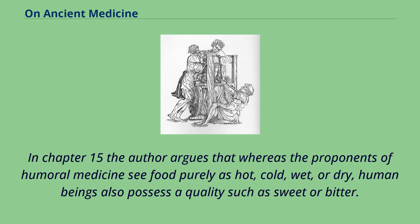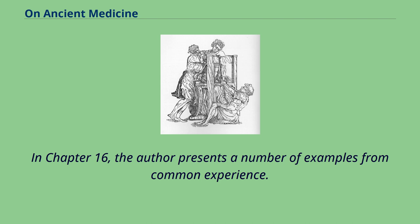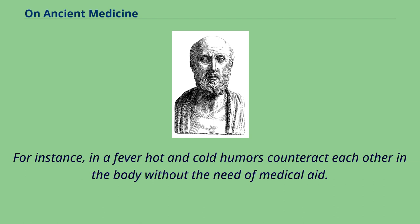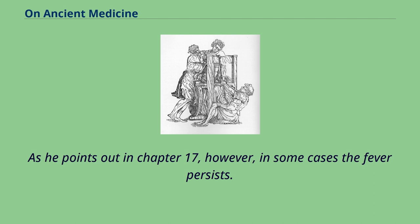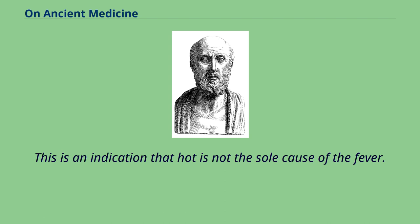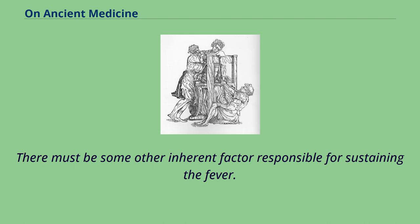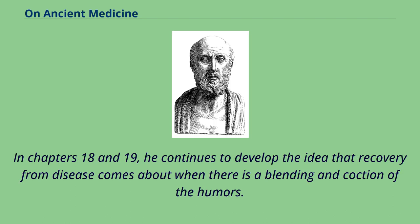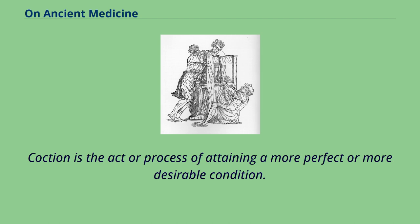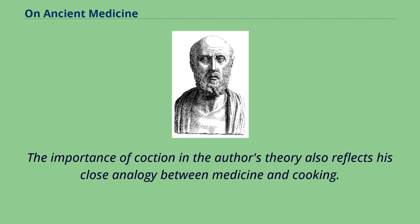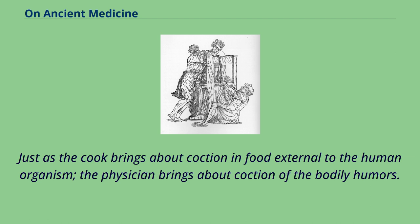In chapter 15 the author argues that whereas proponents of humoral medicine see food purely as hot, cold, wet, or dry, human beings also possess qualities such as sweet or bitter, and these are the ones that cause serious harm to the body. In chapter 16 he presents examples from common experience — for instance, in a fever, hot and cold humors counteract each other in the body without the need of medical aid. However, as he points out in chapter 17, in some cases the fever persists, indicating that hot is not the sole cause. In chapters 18 and 19, he develops the idea that recovery from disease comes about through blending and coction of the humors — the act or process of attaining a more perfect condition. Just as the cook brings about coction in food external to the human organism, the physician brings about coction of the bodily humors.